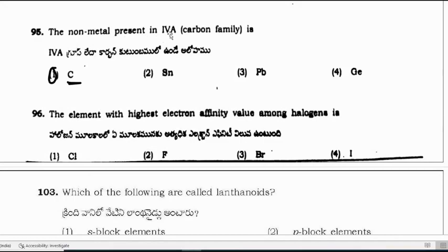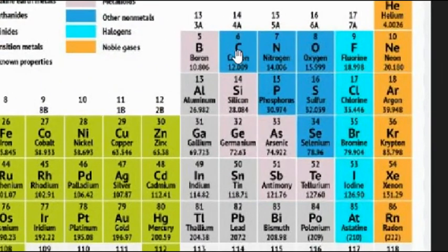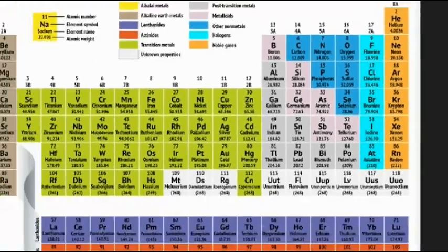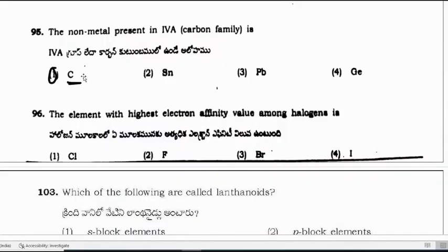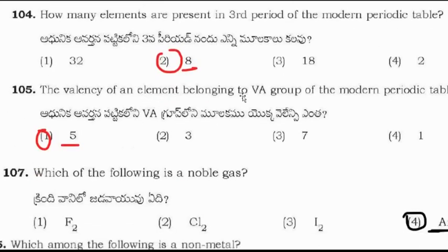Question: The non-metal present in group 4A is carbon. Carbon, nitrogen, oxygen, phosphorus, sulfur, and selenium are non-metals — shown in blue. The non-metal in group 4A is carbon. Question: How many elements are present in the third period? The answer is 8 elements.